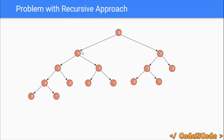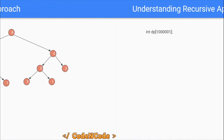Once both nodes return their results, we save dp[5]. Then for n equals 6, we make a recursive call to 4. Since the result of 4 is already saved in the dp array, we check, find it pre-calculated, and return directly without making any further recursive calls. This way, for any n, we calculate the result only once and then return it directly from the dp array, making the running time linear.